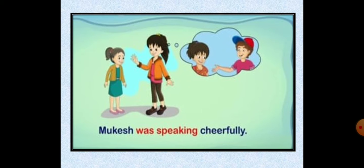See some examples here. 'Mukesh was speaking cheerfully.' Past ke under koi incident ho raha hai, us ko batane ke liye hum use karenge 'was' plus verb plus 'ing', ya 'were' plus verb plus 'ing'. That's the formation of past continuous tense — according to subject, we put was or were plus main verb plus ing.